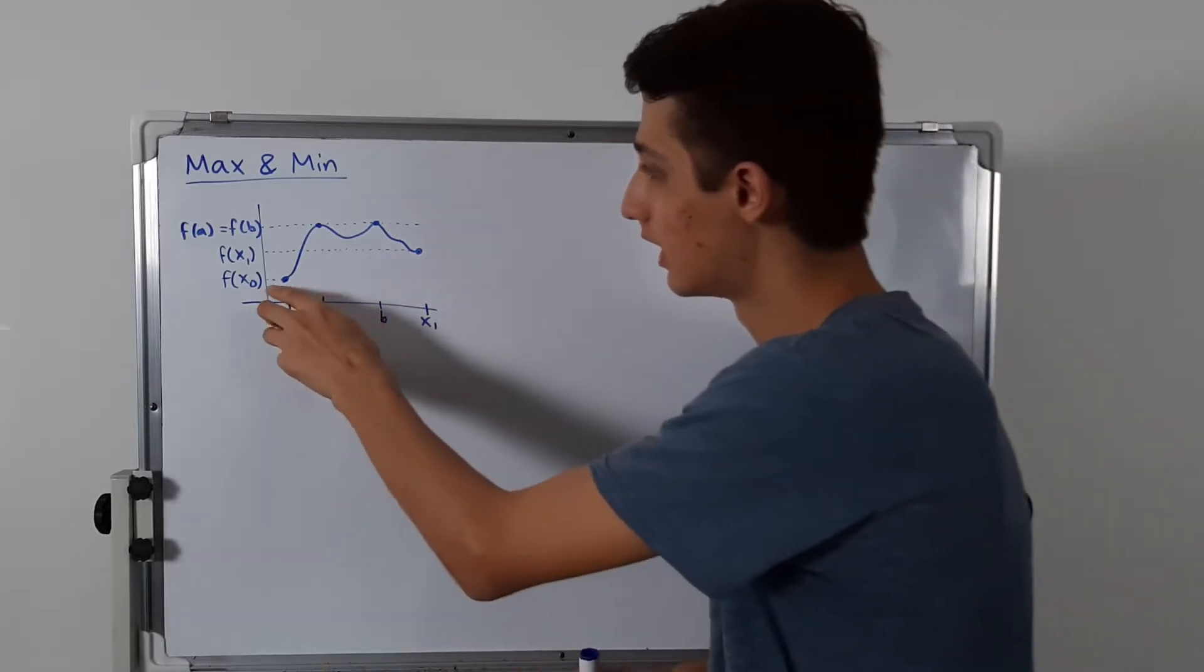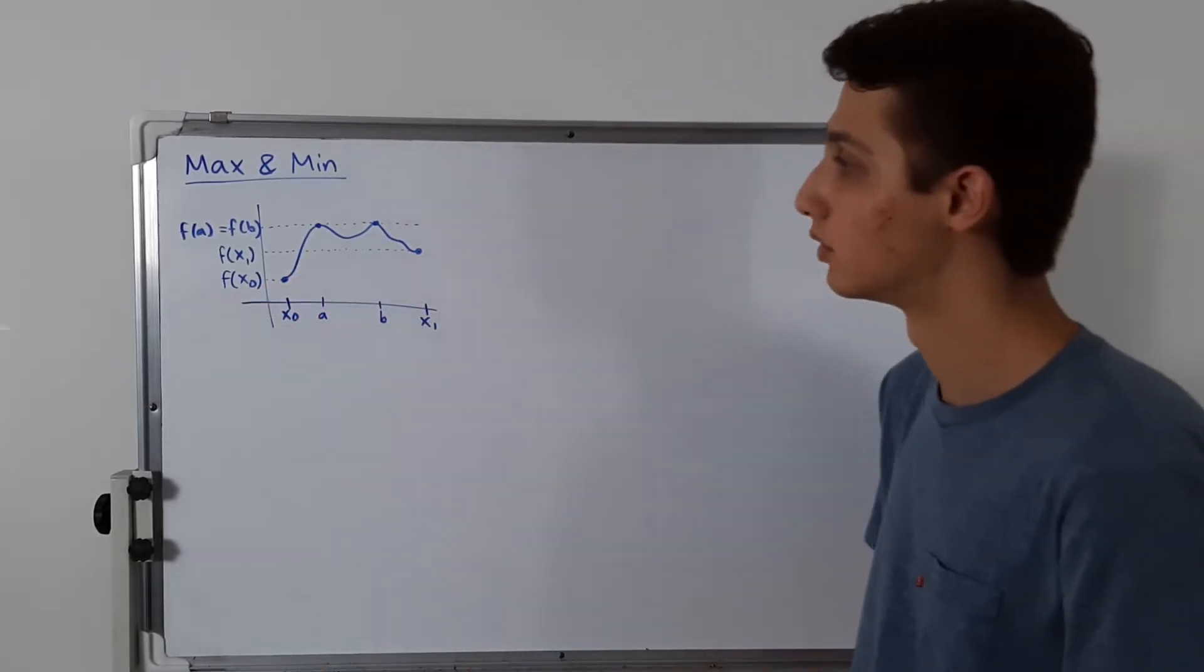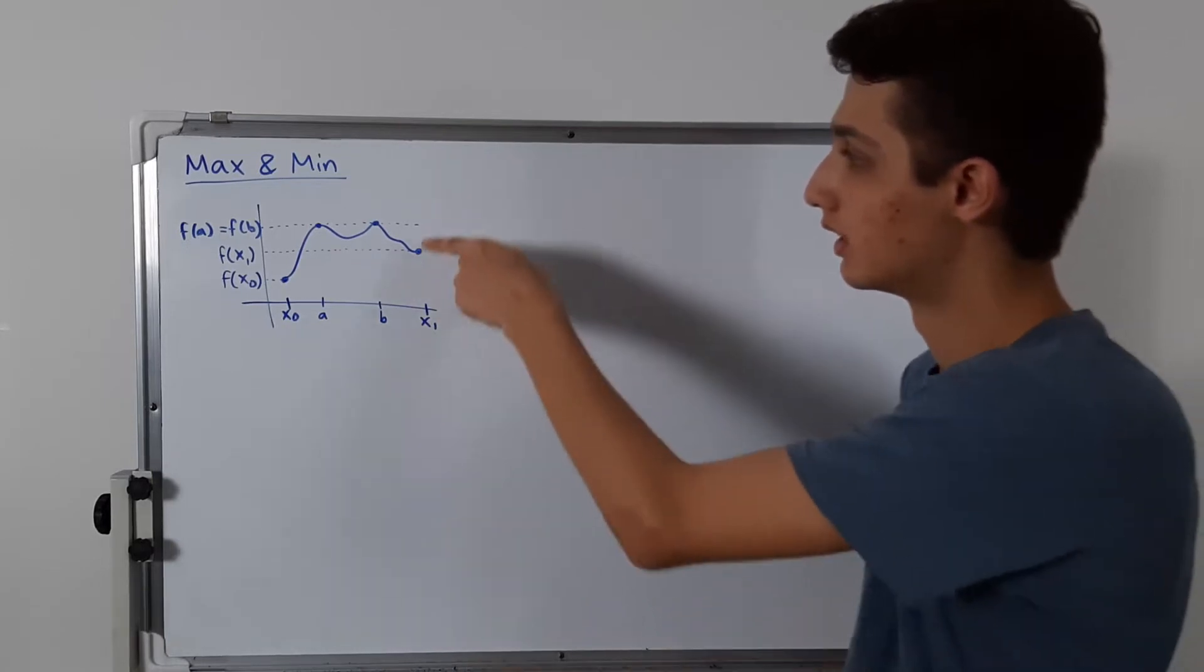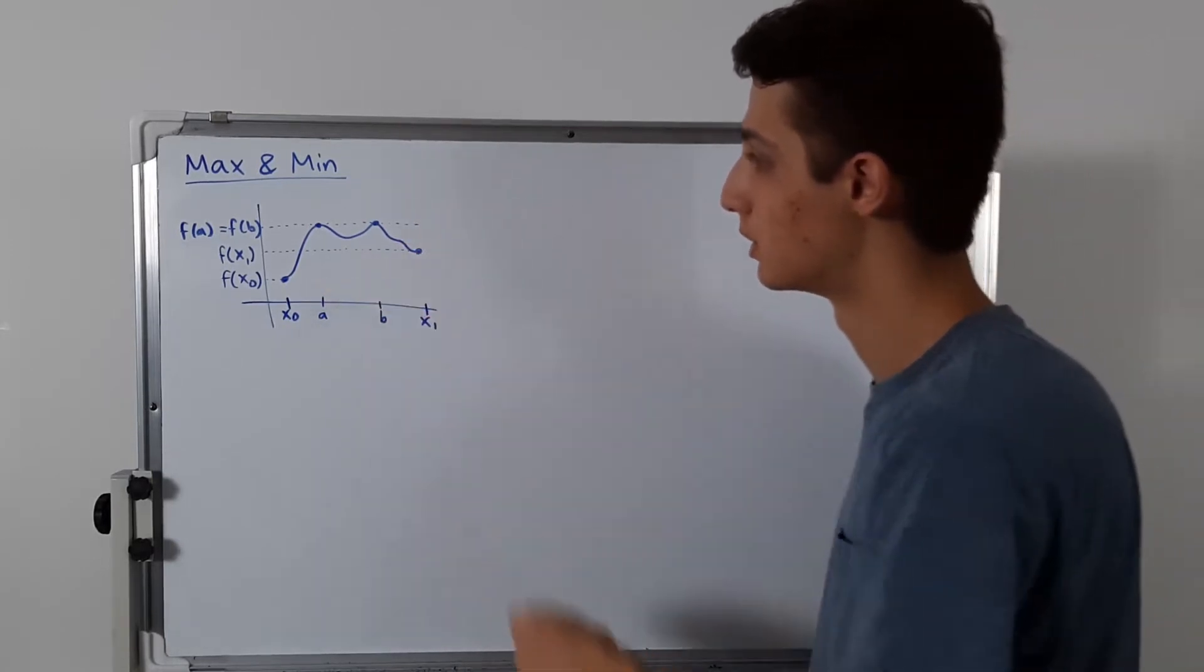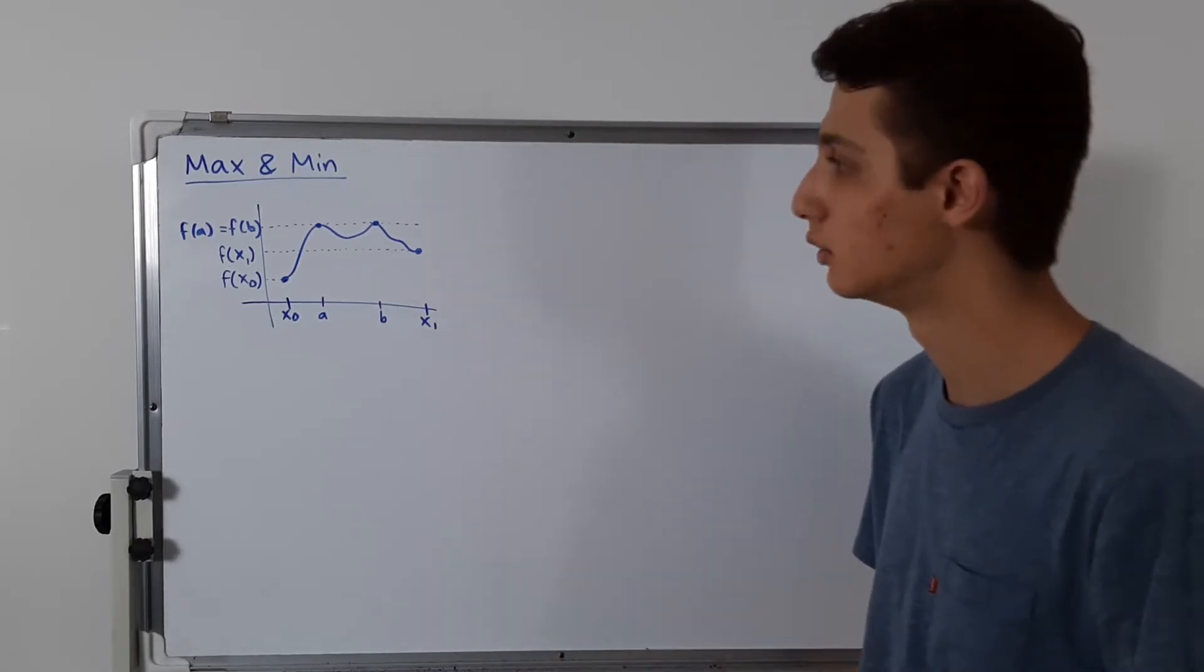And the minimum is f of x0, because there's no lower point on the function. So in this case, these are the maxima, and these are the minima. So that's pretty much all there is to it. But what exactly, how do you define that?